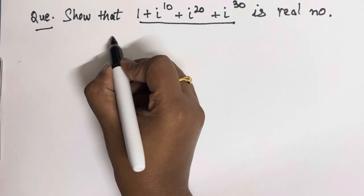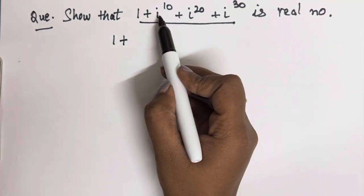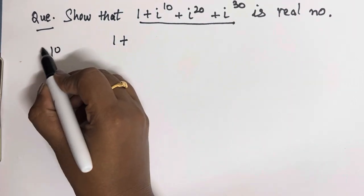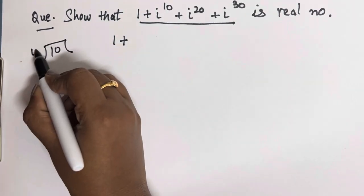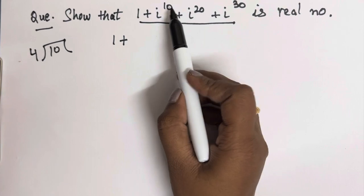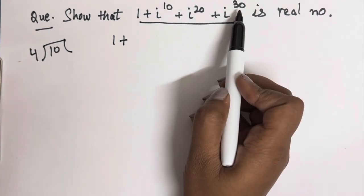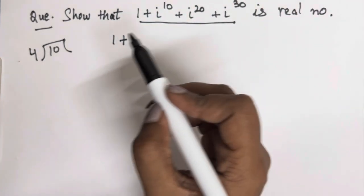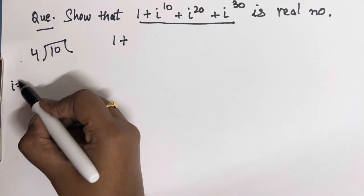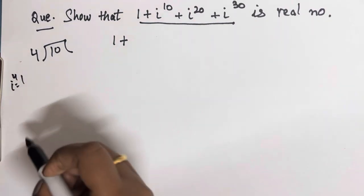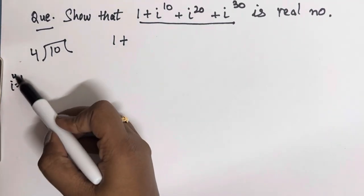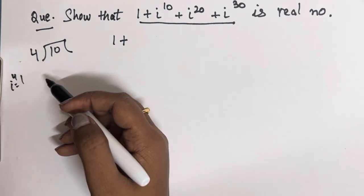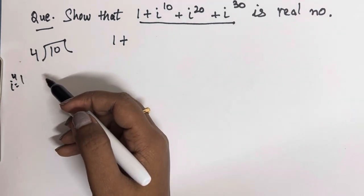So this is one. For iota to any power, what you can do is just divide the power by 4, because we know iota to the power 4 equals 1, and 1 to the power anything will become 1. So eventually we will get to the number that is 1.